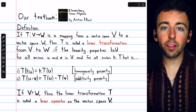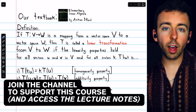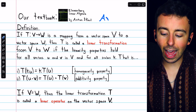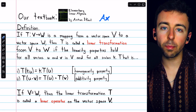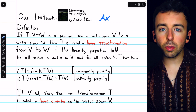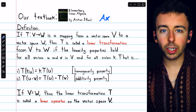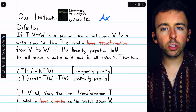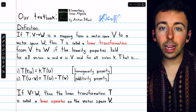We previously discussed the idea of matrix transformations. We saw how by multiplying a vector x by a matrix A, we could view that matrix as a transformation which takes us from one Euclidean space to another. We also saw that these matrix transformations satisfy what are called linearity properties, and so these matrix transformations belong to a broader class of things called linear transformations.